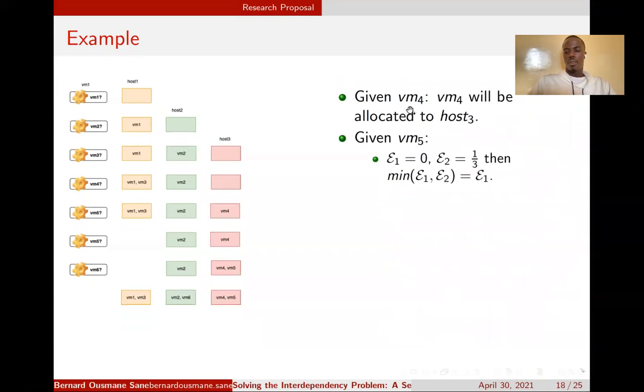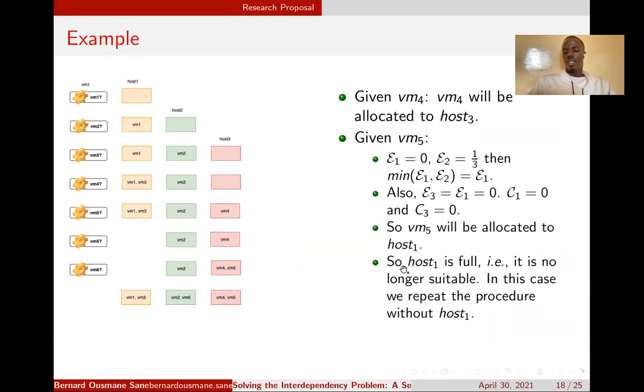Given VM4, when we execute the process, VM4 will be allocated to host 3. Given VM5, we execute the process and find that the secure host is host 1. But unfortunately, the host is already full. So in this case, as we said earlier, we repeat the process without host 1. By doing that, we find that the secure host is host 3.